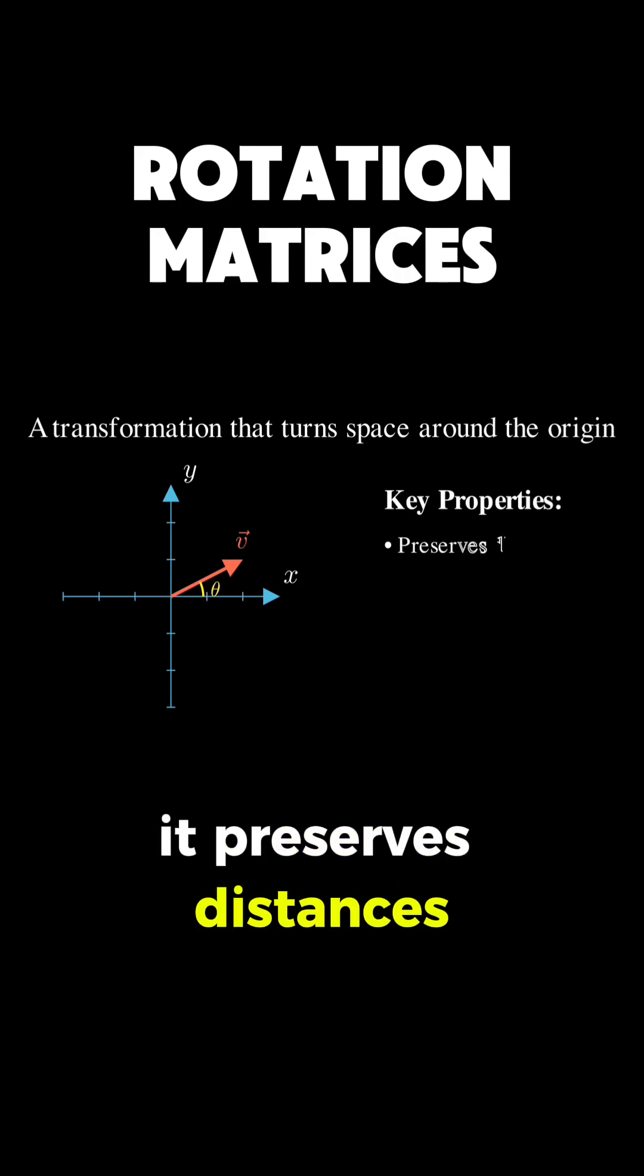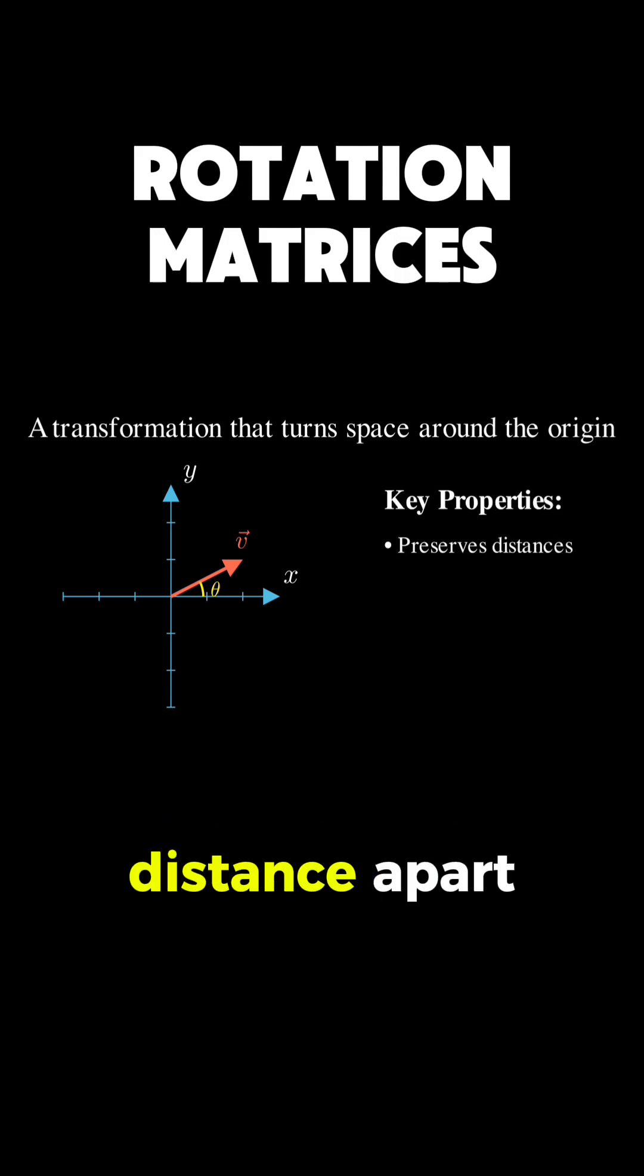It preserves distances, so if two points are a certain distance apart before rotation, they remain the same distance apart afterward.